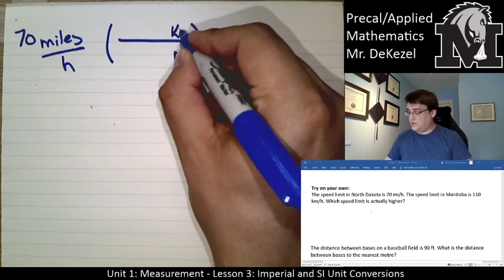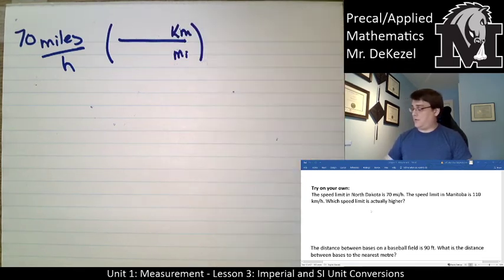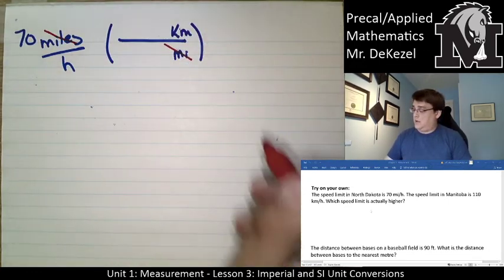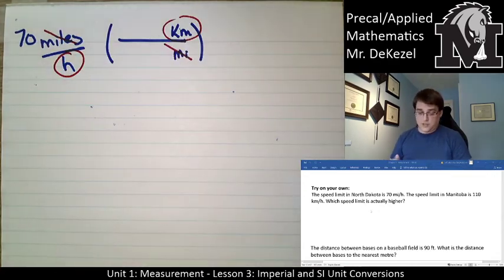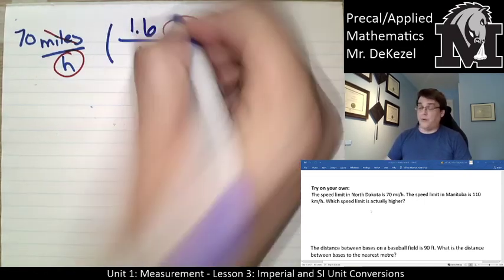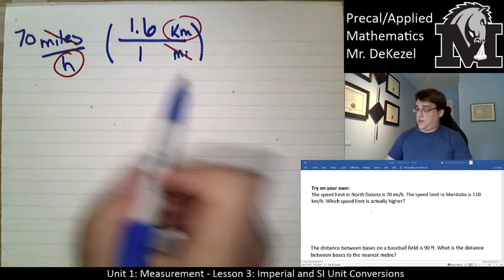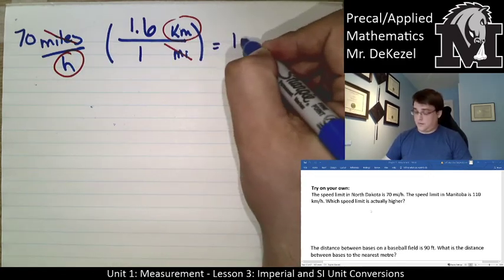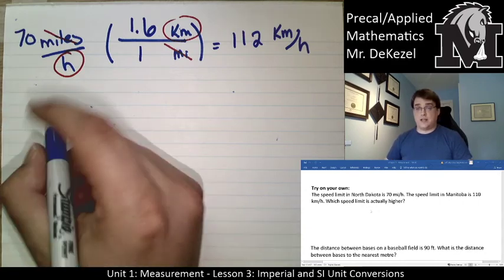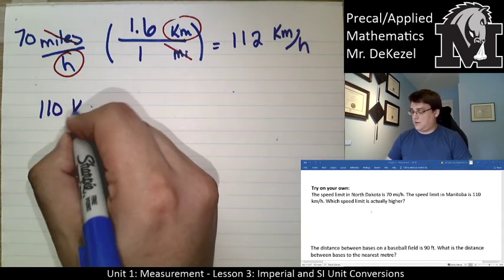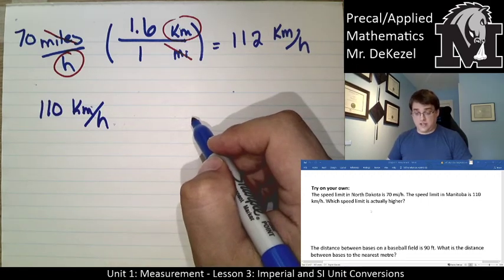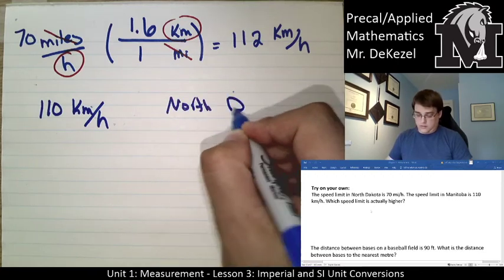We have miles on the top that we want to get rid of, and we want to go into kilometers. We'll be able to cancel the miles units and be left with kilometers per hour. We need to know how many kilometers there are in one mile. In one mile, there's 1.6 kilometers, so I'm multiplying 70 by 1.6 to get 112 kilometers per hour. If the speed limit in Manitoba is 110 kilometers per hour, that means North Dakota has a higher speed limit.